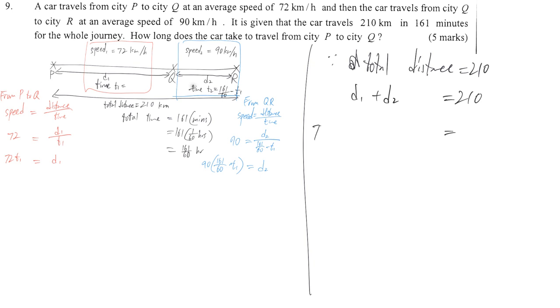Then we may write 72T1 and then plus 90 times this one is equal to 210. From this formula, we know T1 is the only unknown. That means we can solve the answer here.